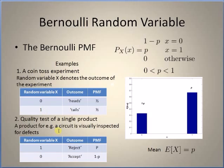Another example is a quality test of a single product, for example a circuit. A quality control engineer visually inspects a manufactured circuit for defects and rejects it when found unacceptable. The random variable represents whether the circuit is accepted or not.